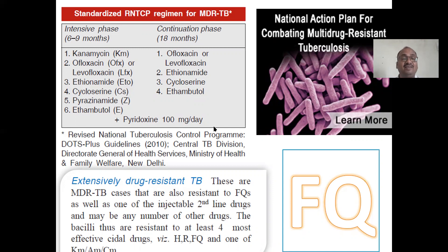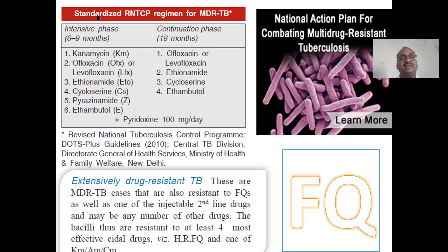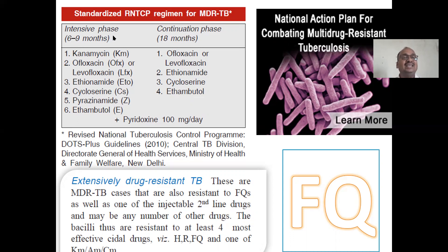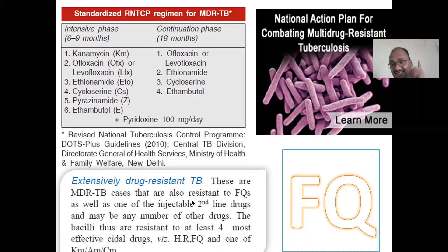Doctors then started giving fluoroquinolones as standard treatment. But the organism also got resistant to fluoroquinolones — this is called extensively drug-resistant TB. For multi-drug resistant mycobacterium, treatment requires an intensive phase of six to nine months followed by a continuous phase, totaling 18 months, using medications like kanamycin and fluoroquinolones.